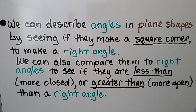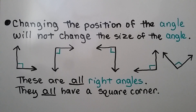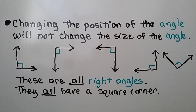We can also compare angles to right angles to see if they are less than — that would be more closed than a square corner — or greater than, which would be more open than a right angle. Changing the position of the angle will not change the size of the angle. So these are all right angles; they all have a square corner, no matter what direction the rays are pointing.